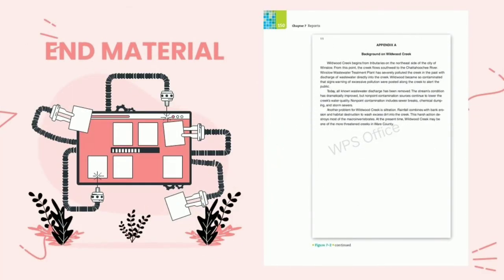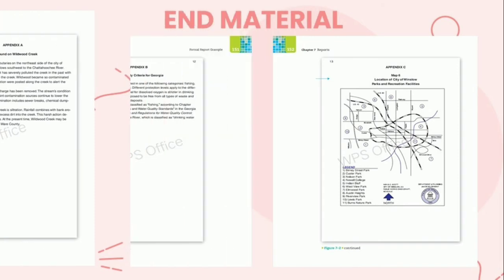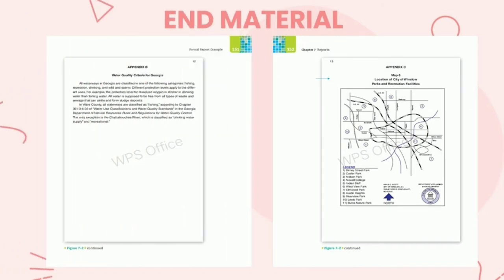Lastly is the end material. One kind of end material is appendices, mentioned in the context of the discussion section. Note that formal reports may also contain works cited pages or bibliographies, which should be included in the end materials.